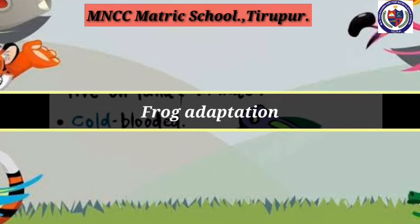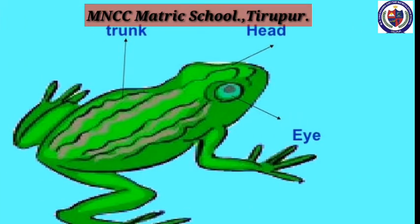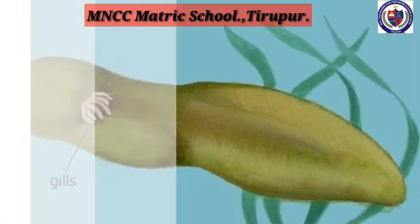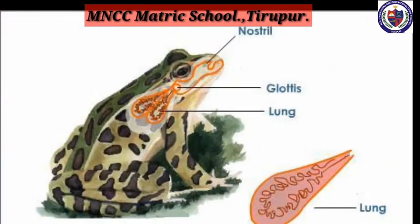First we move to adaptation in frogs. Frogs are amphibians — amphibian means they live on land and in water. They are cold-blooded animals. Frogs lay eggs, they have moist skin, and webbed feet. The body is divided into head and trunk with two pairs of limbs. The larval stage of frog respires with the help of gills, and the adult frog respires through skin, lungs, and the buccal-pharyngeal region.